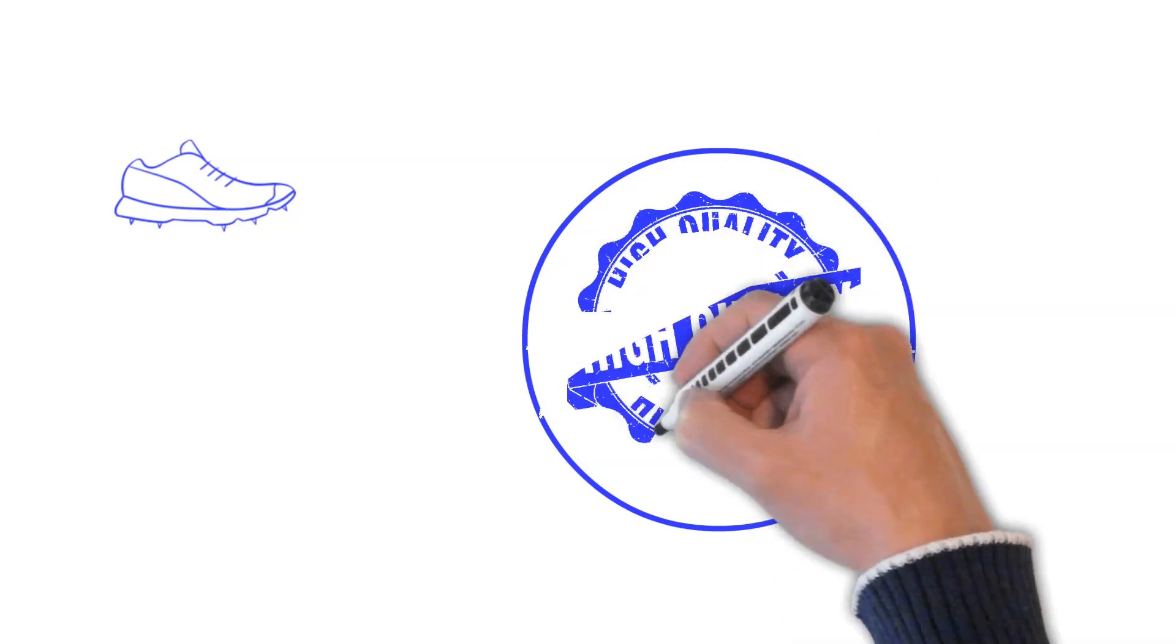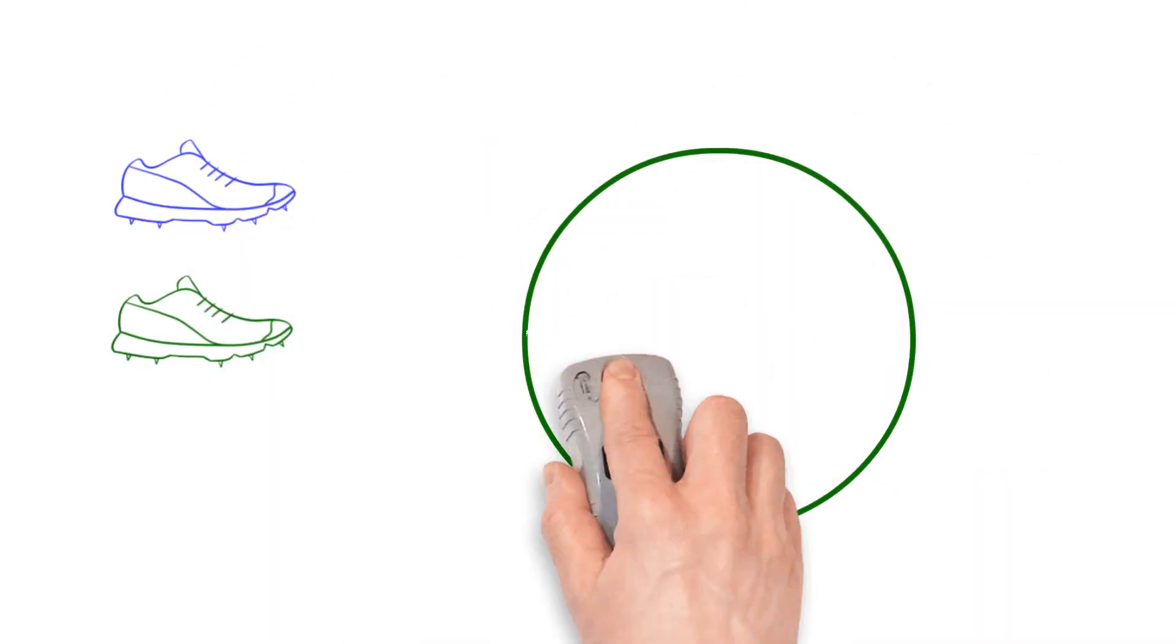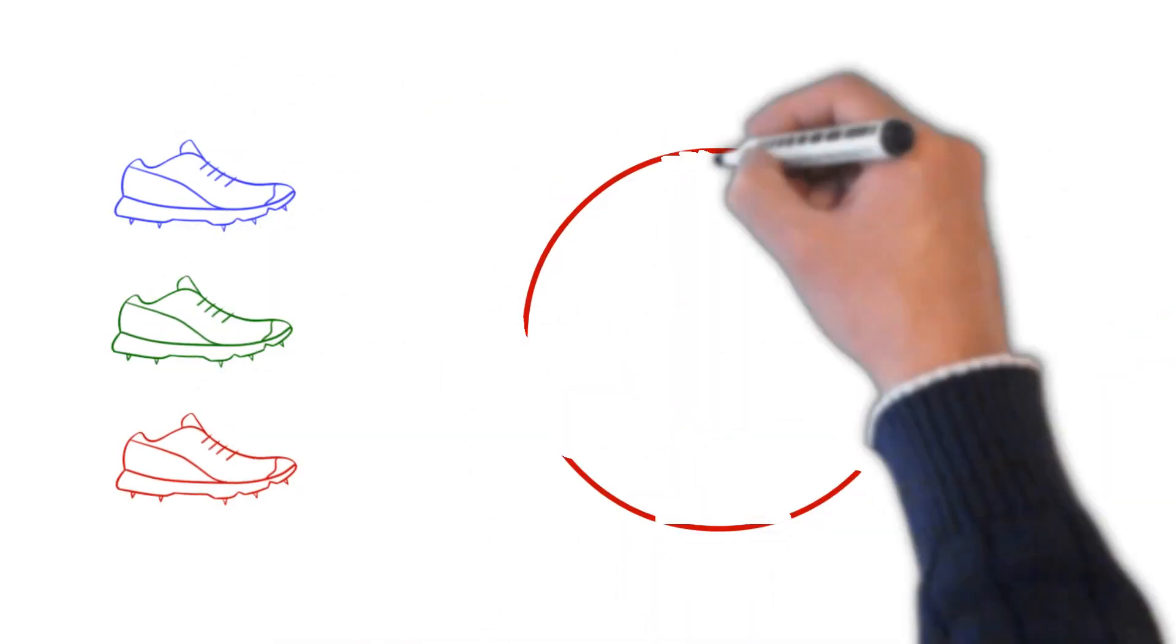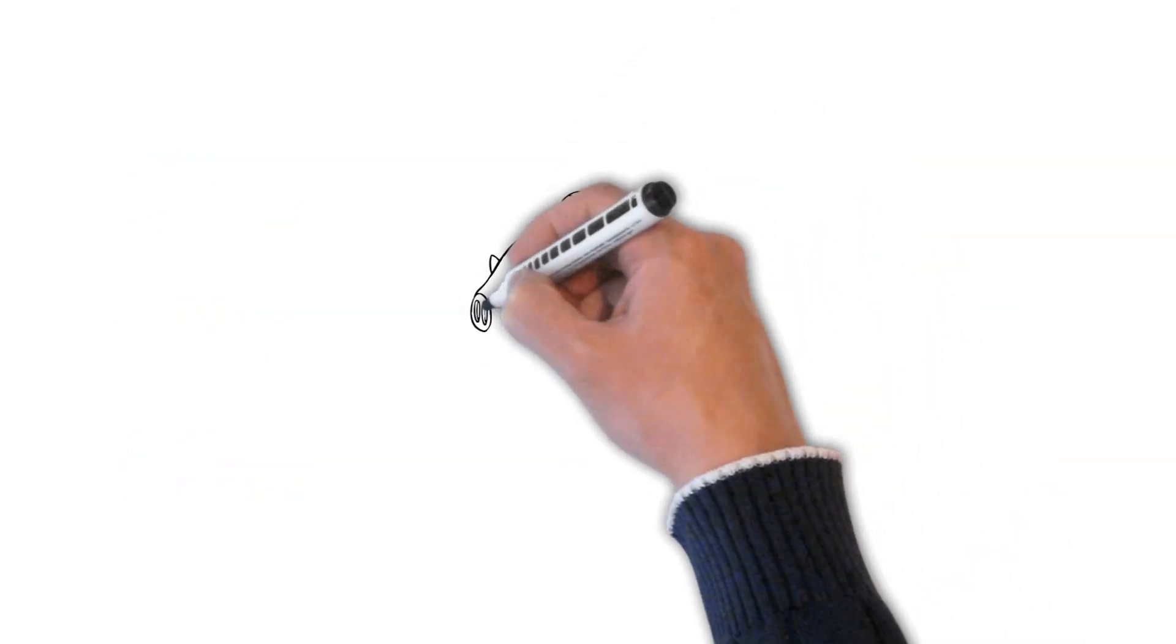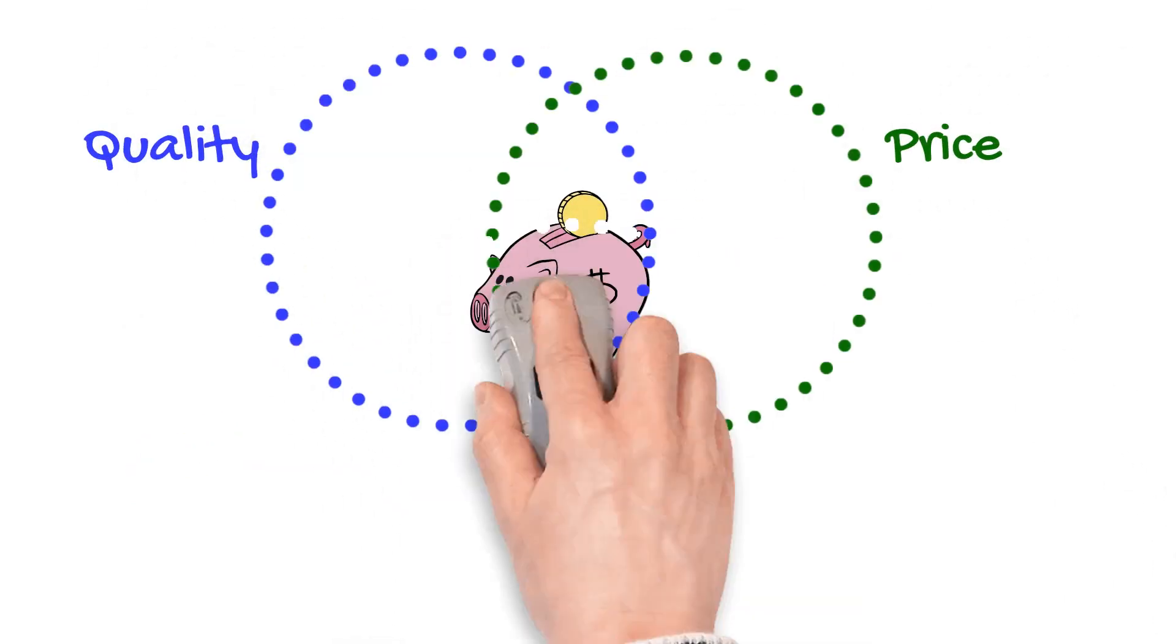Step number one, we find the best shares in the world. Step two, we identify the shares when they are great value at a low price. Step number three, we choose companies that give us a rental income. The secret of success is a combination of the three steps: quality, price and rental income.